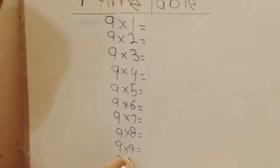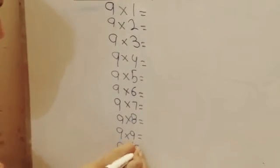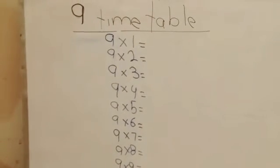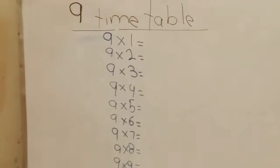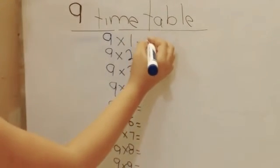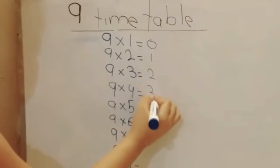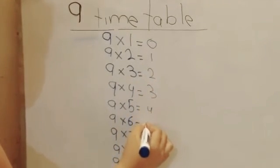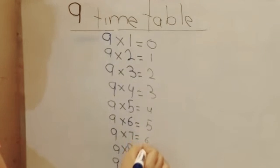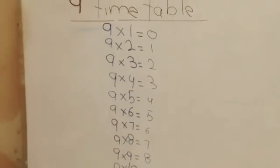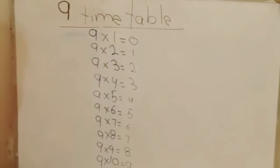And lastly, 9 multiplied by 10 equals. So first you have to write counting from 0 to 9 from the ascending order: 0, 1, 2, 3, 4, 5, 6, 7, 8, 9.